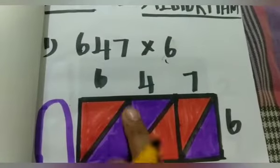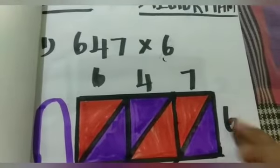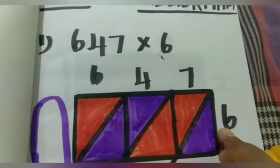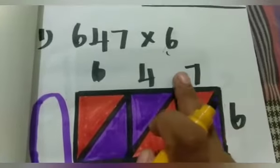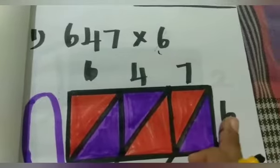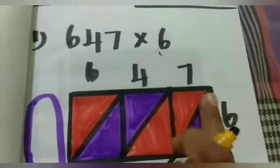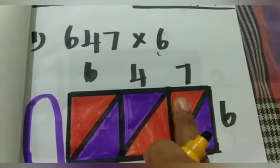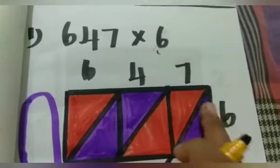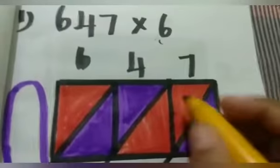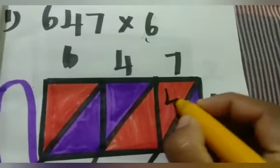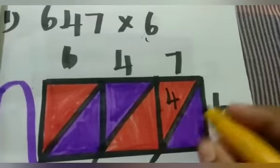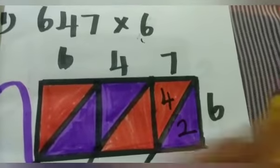647 is written on top. Next, 6 is on the side. Multiply first: 7 and 6. 7 sixes are 42. So, 4 in the 10-strip and 2 in the 1-strip.